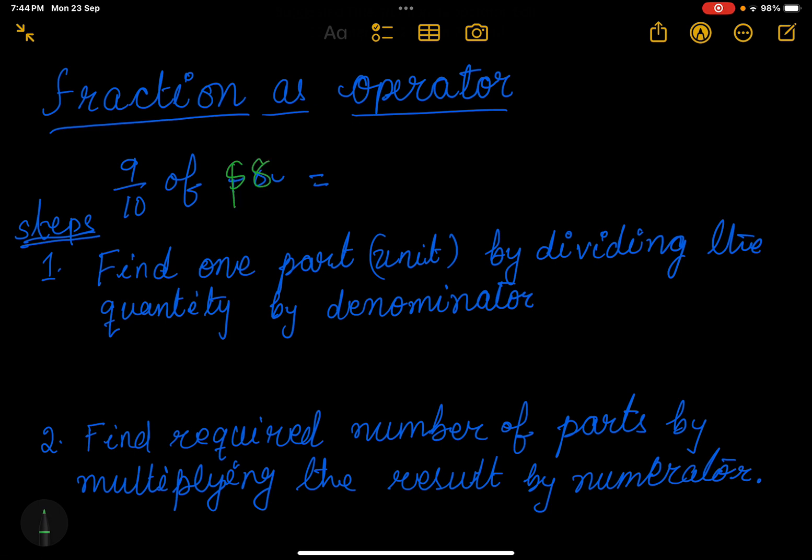So how will we find this? There are two ways. First step is to find one part (or one unit) by dividing the quantity by the denominator. So the quantity is $80, divided by the denominator, which is 10 here. So my answer will be